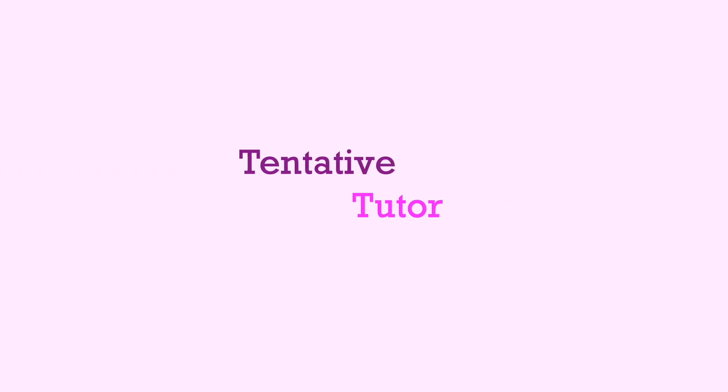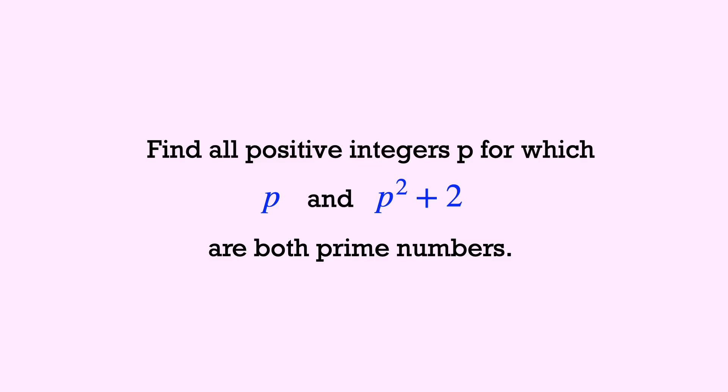Hi guys and welcome to the Tentative Tudor channel. Here's an interesting one. Find all positive integers p for which p and p squared plus 2 are both prime numbers.